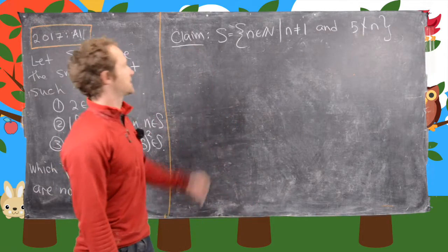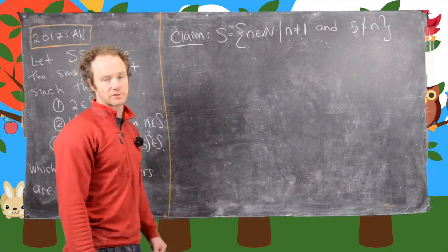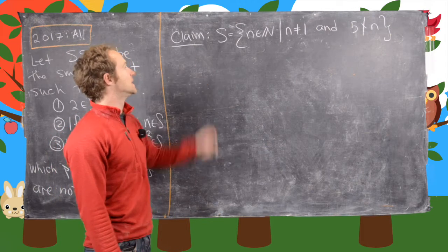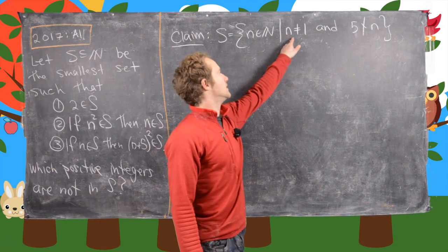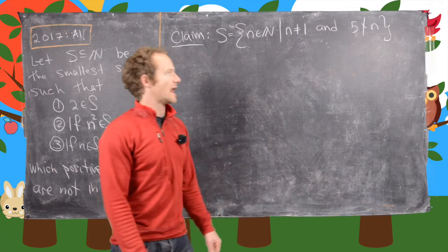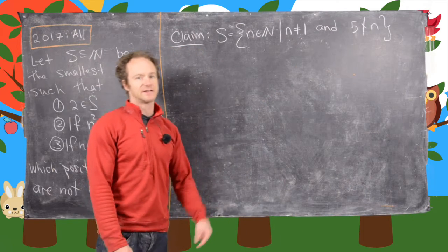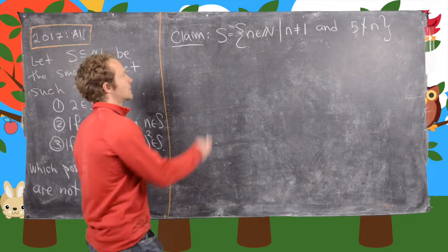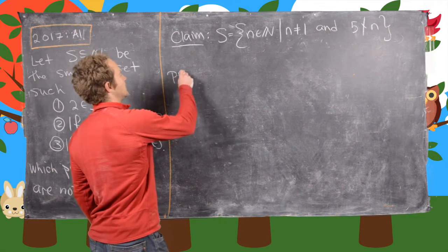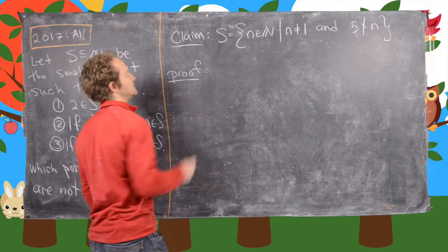So let's look at this claim that we've written by this exploration that we did on the last board. So we have S are all natural numbers where N is not equal to 1 and 5 does not divide N. So it's everything except for 1 and multiples of 5. And so how can we prove this claim that S happens to be this set?